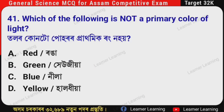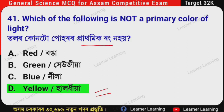Next question: Which of the following is not a primary color of light? (Assamese: Tonor konto paharar prathamik rong na hai?) The correct option is Option D — Yellow (halo diya). Yellow is not a primary color of light. The primary colors of light are Red, Green, and Blue.